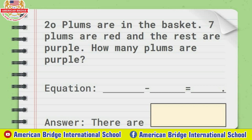20 plants are in the basket. Seven plants are red and the rest are purple. How many plants are purple? Do you understand, everyone? So now teacher will read again: 20 plants are in the basket. Seven plants are red and the rest are purple. How many plants are purple?